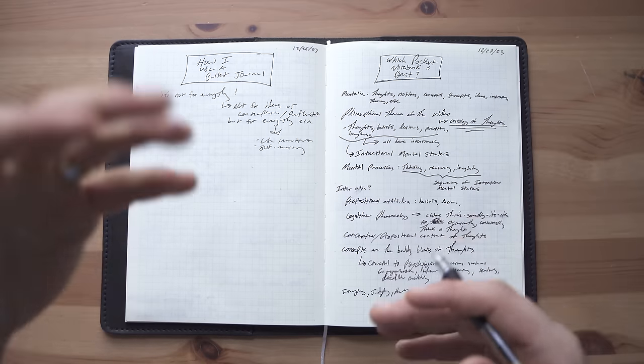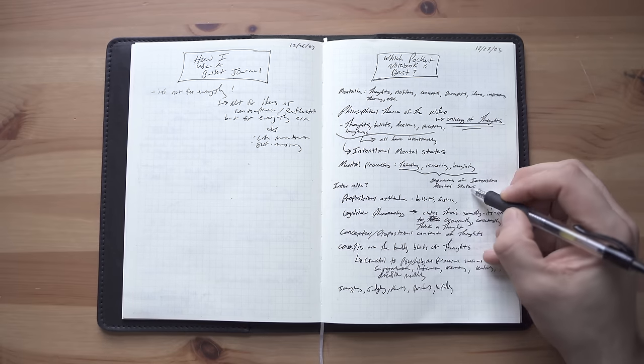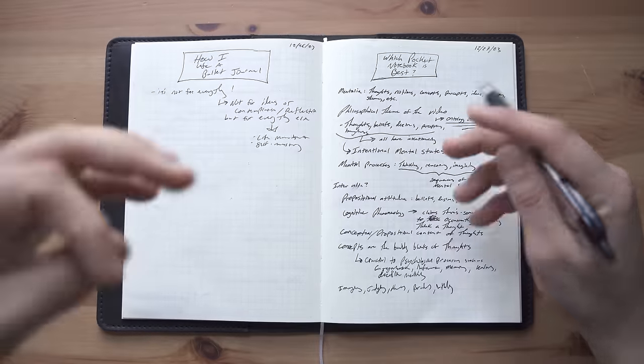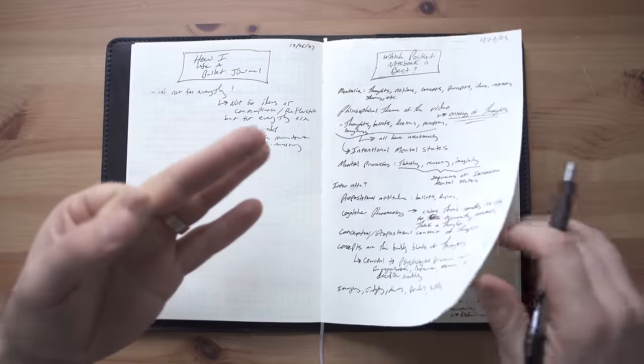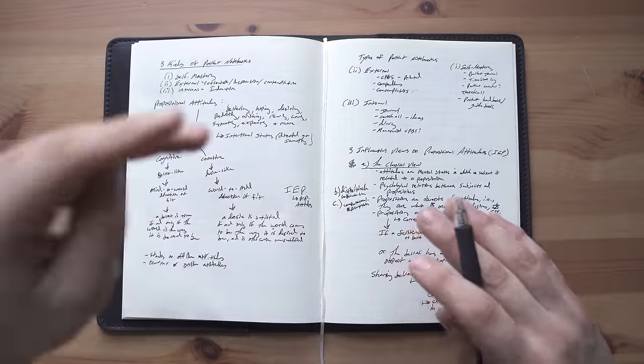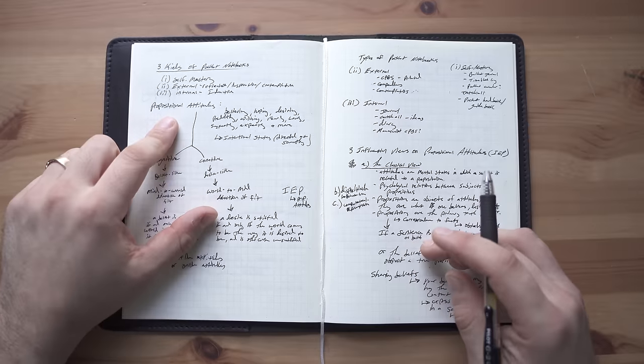So strings of mental states are going to be mental processes, and depending on what those look like, they'll be called different things. The kind of mental states and mental processes which are collected in the third type of pocket notebook, in the internal ideation type of notebook, these are going to be propositional attitudes.